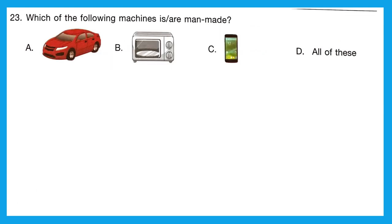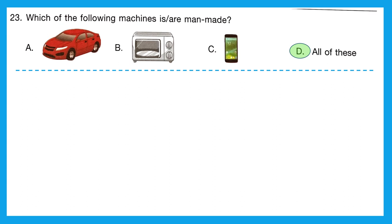Question 23: which of the following machines is or are man-made? A — car, yes, man-made. B — microwave oven, yes, man-made. C — smartphone, yes, absolutely. D — all of these. Our correct option is D, all of these.